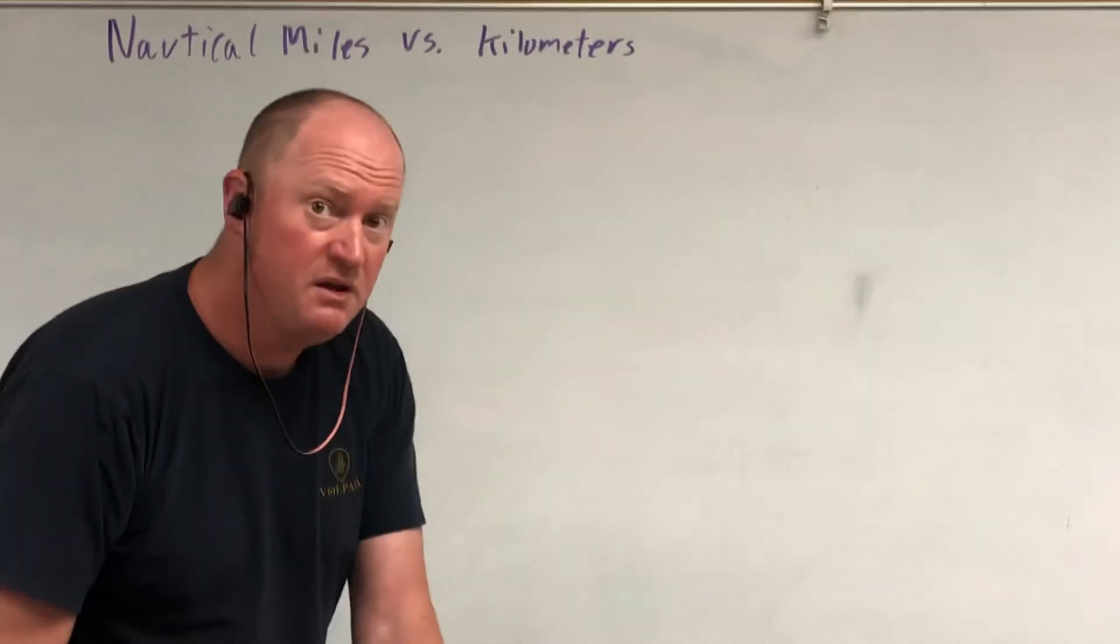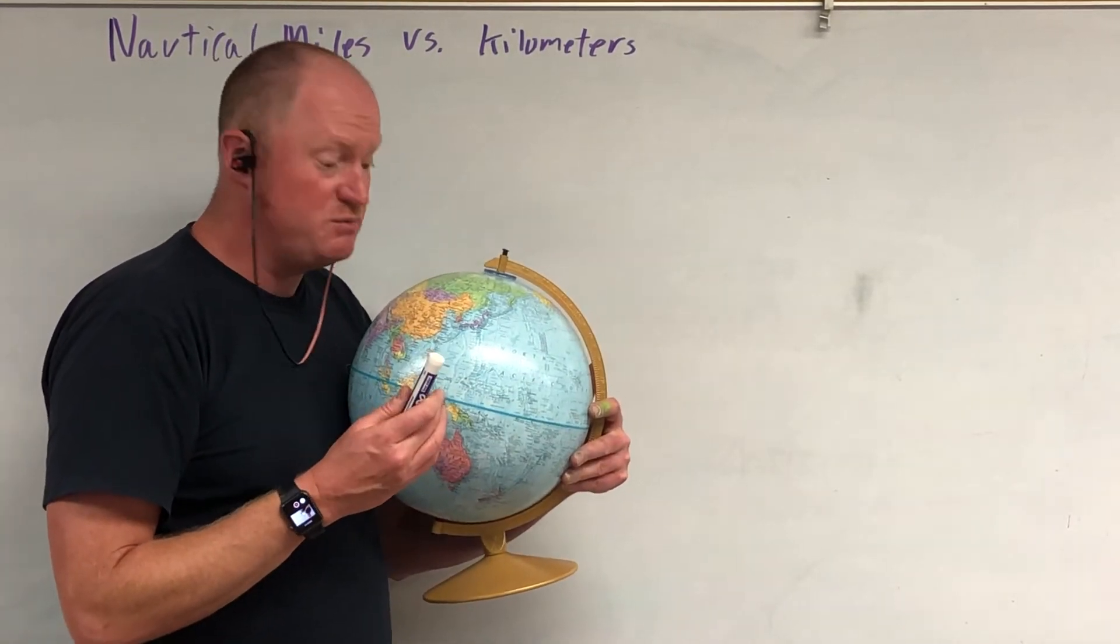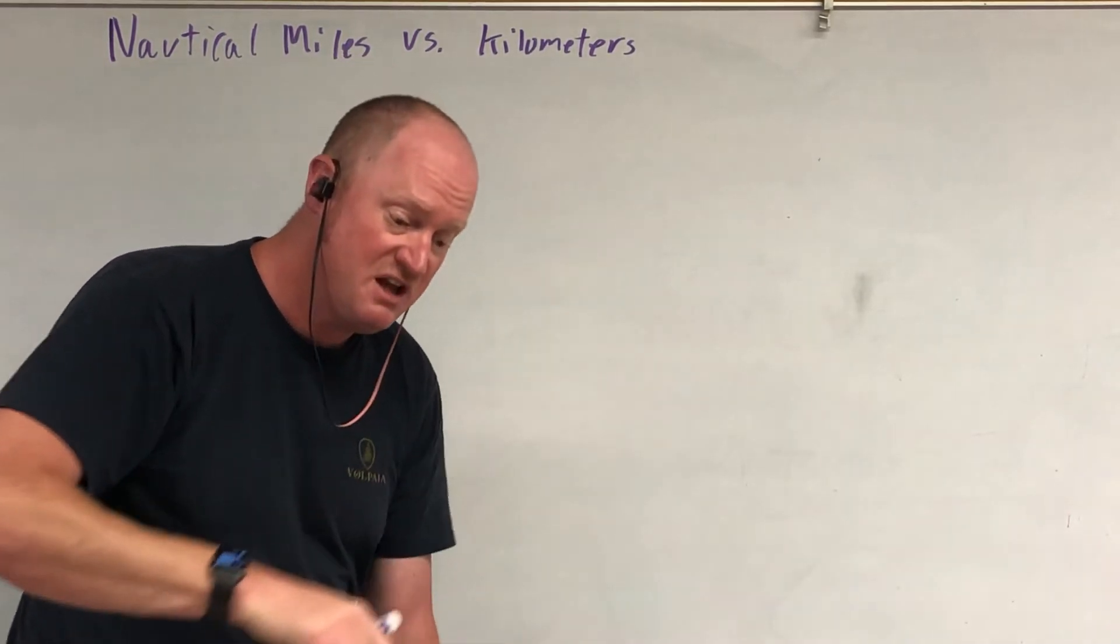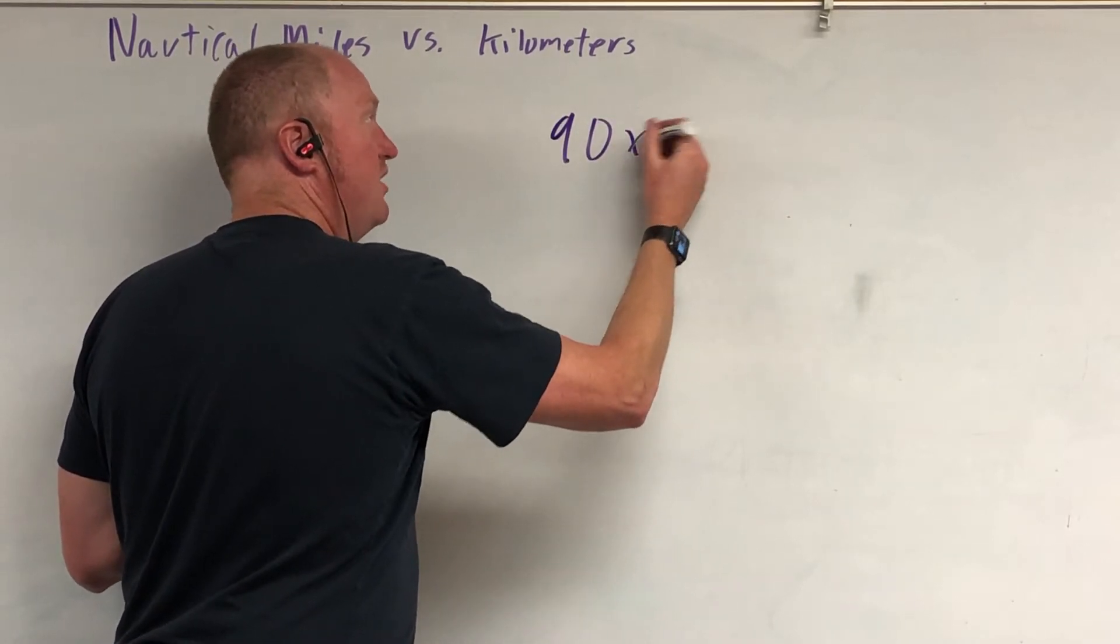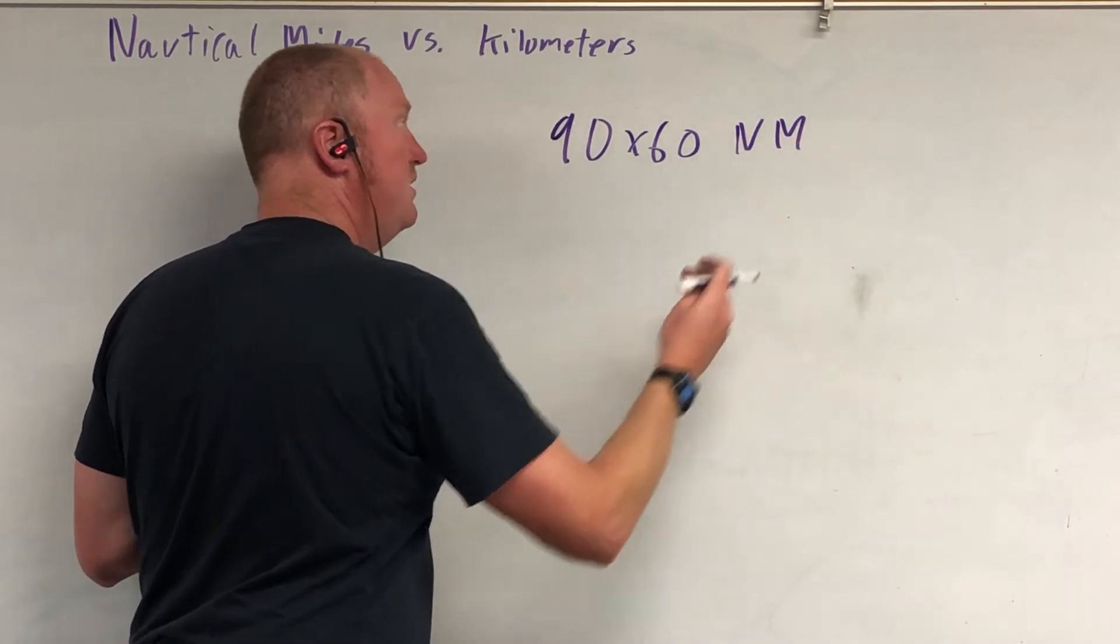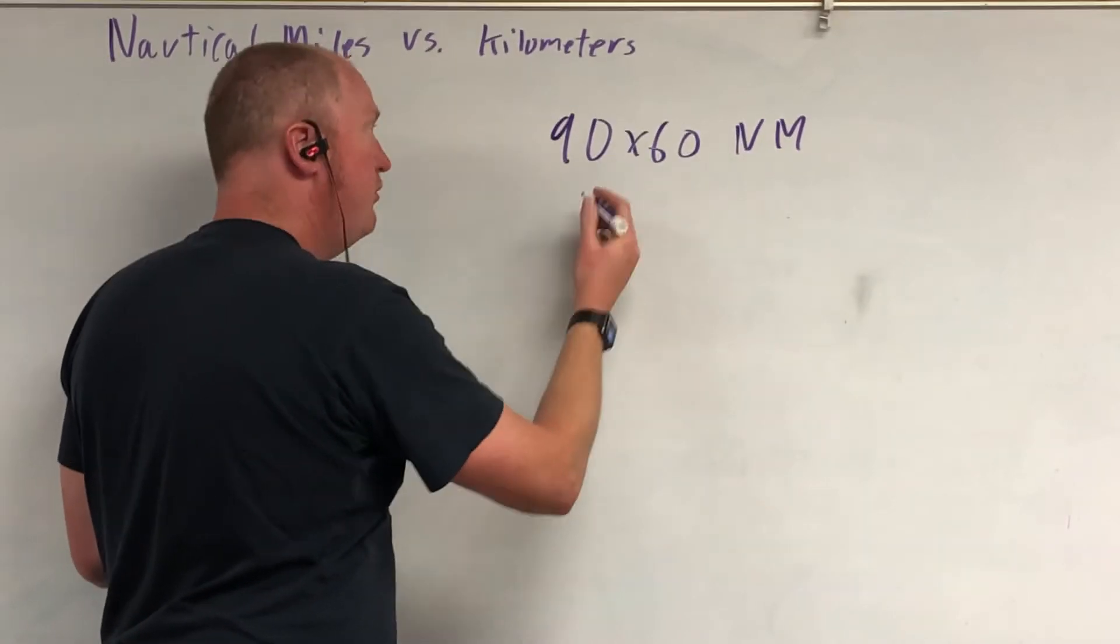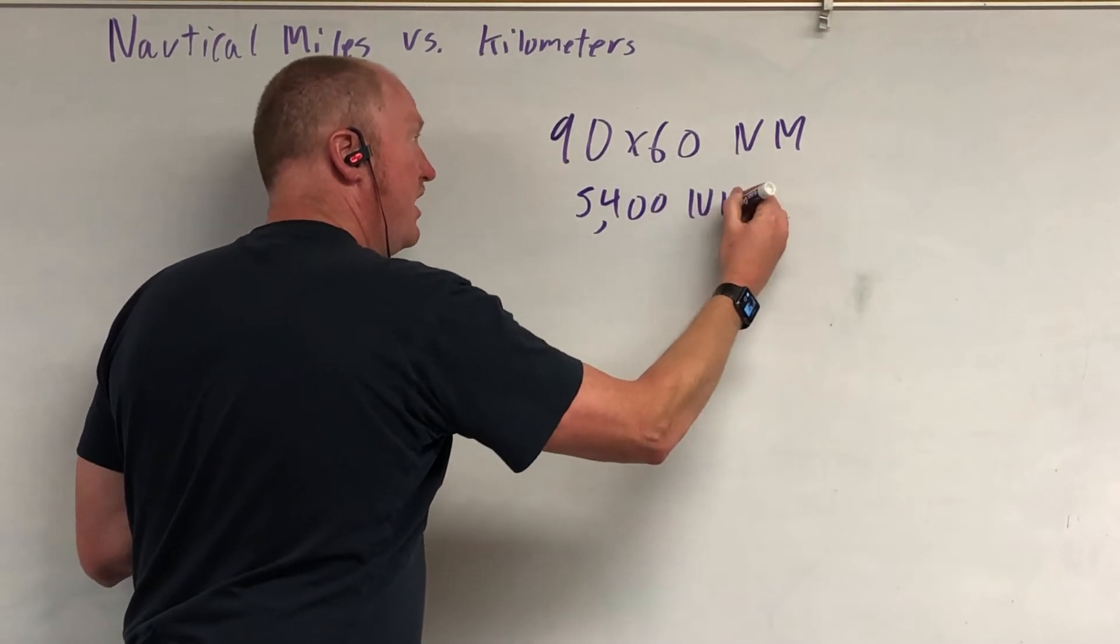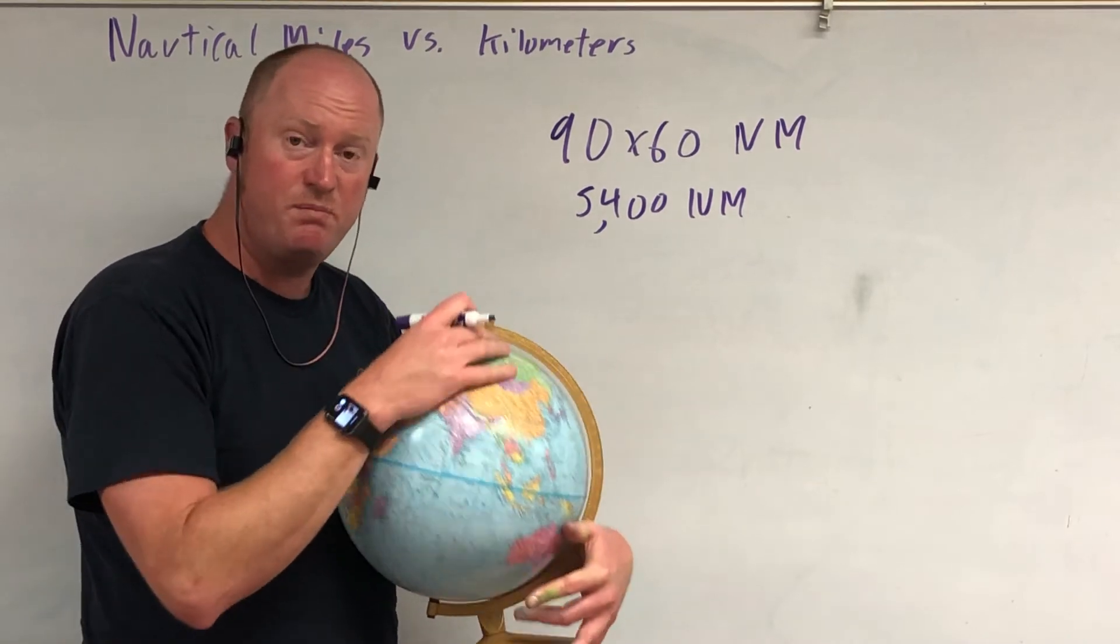So a nautical mile is 1/60th of 1 degree. There are 90 degrees from 0 degrees north to 90 degrees north. From the equator to the North Pole there's 90 degrees and there's 60 nautical miles in each degree. So the distance between the North Pole and the equator is 60 times 90 nautical miles, for 5,400 nautical miles.